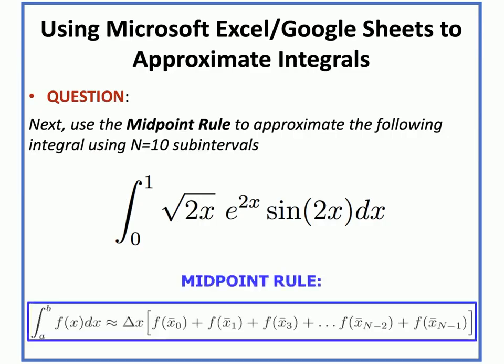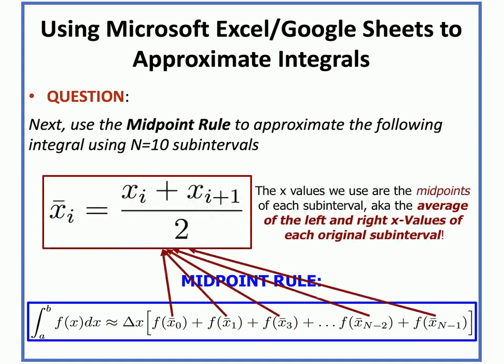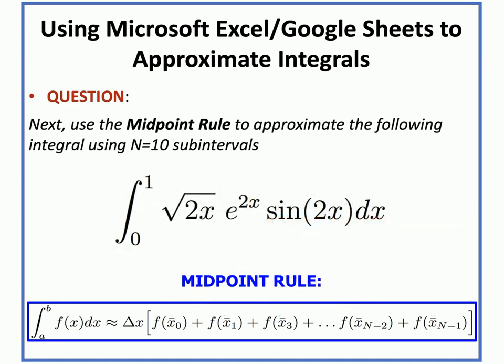Finally, let's use the midpoint rule to approximate the same integral with n equals 10 subintervals. Recall that for midpoint rule, all coefficients on the function values are 1, and there is just a delta x (not over 2 or 3) out in front. The key difference is that we evaluate the function at the midpoints of each subinterval — the average of the left and right endpoints — rather than at the endpoints themselves.